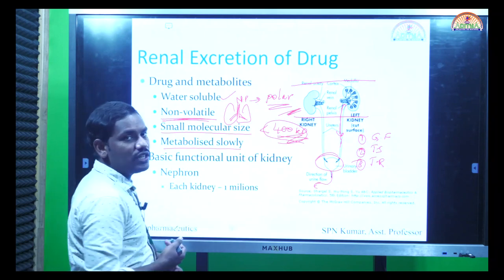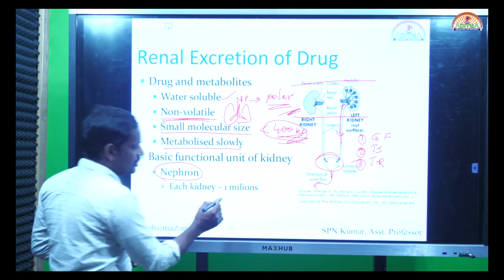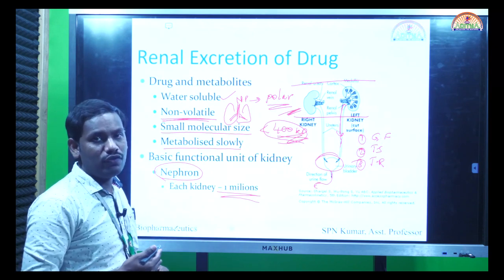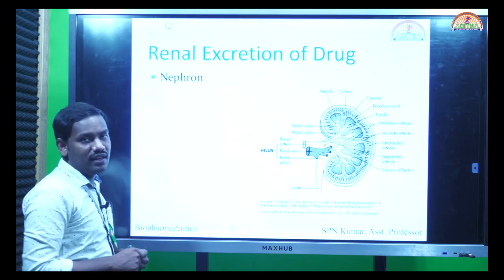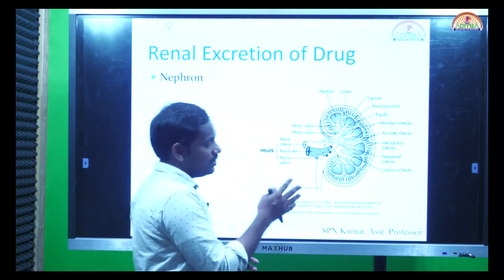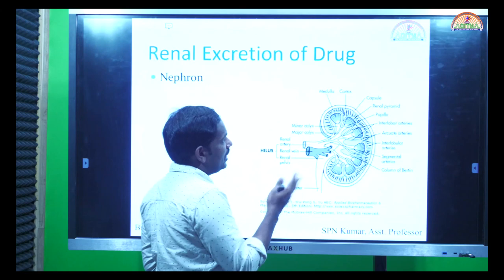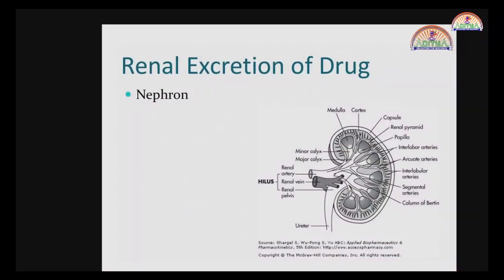The basic functional unit of the kidney is the nephron. Each kidney consists of around one million nephrons. As age progresses, functional nephrons slowly reduce, which leads to renal compromise in elderly patients. The kidney structures include the cortex, medulla, and capsule, which eventually open into the ureter. Each kidney's nephron comprises the following parts.